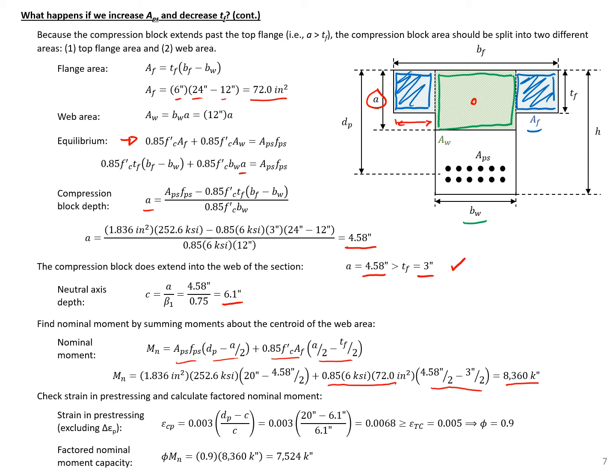We also need to check to make sure that we're tension-controlled. Using the strain diagram again and calculating the strain in the prestressing — excluding any locked-in prestressing strain — we see that we're tension-controlled. So we'll use a phi of 0.9, and taking 0.9 times our Mn, we get a factored nominal moment of 7,524 kip-inches.